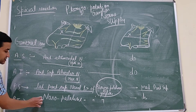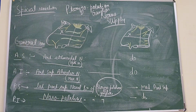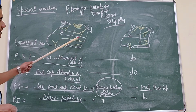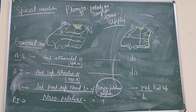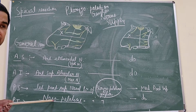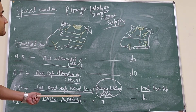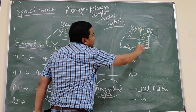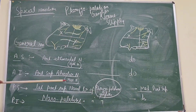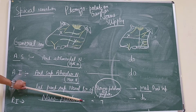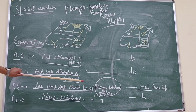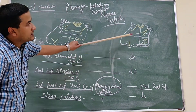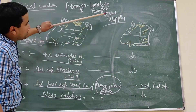For the inferior posterior region, it is the nasopalatine nerve and the greater palatine nerve — both branches of the pterygopalatine ganglion. They are distributed through the maxillary nerve and supply this posteroinferior quadrant. Remember: the pterygopalatine ganglion supplies the entire posterior quadrant, whether upper or lower.